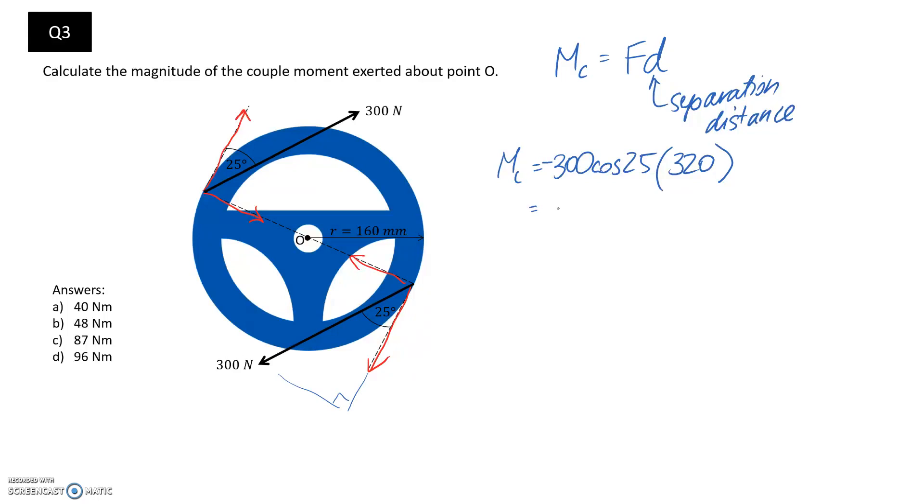When we solve this in a calculator, it comes out to about negative 87,005, and the units: the force unit we used was newtons and the distance unit I used was millimeters.